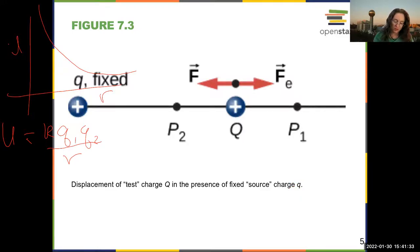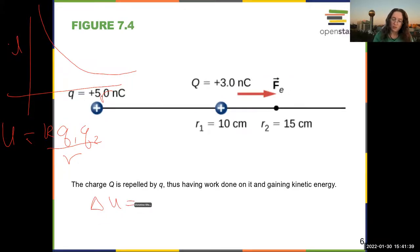So our change in potential energy is going to be K Q₁ Q₂ times 1 over R. In this case, R final is R₂, minus 1 over R₁.